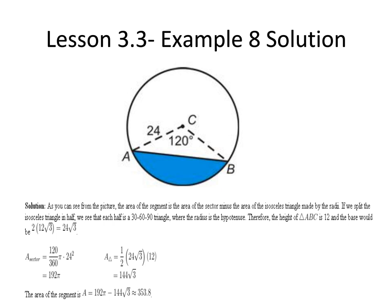We can now find the area of the segment by subtracting the area of the triangle from the area of the sector. So the area of the segment equals 192 times pi minus 144 times the square root of 3.